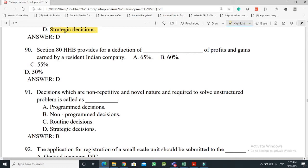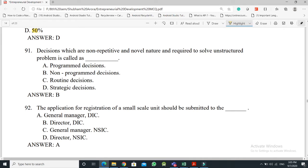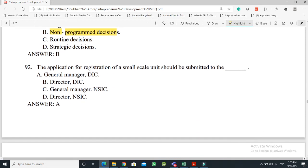Question No. 90: Section 80HHB provides for a deduction of what percentage of profits and gains earned by a resident Indian company - the answer is Option D, 50%. Question No. 91: Decisions which are non-repetitive and novel in nature and required to solve unstructured problems are called - the answer is Option B, Non-Programmed Decisions.